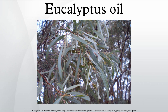The leaves of selected eucalyptus species are steam distilled to extract eucalyptus oil. Eucalyptus oils in the trade are categorized into three broad types according to their composition and main end use: medicinal, perfumery, and industrial.